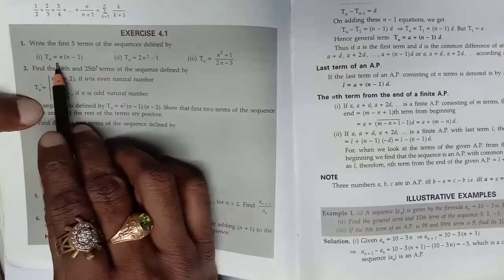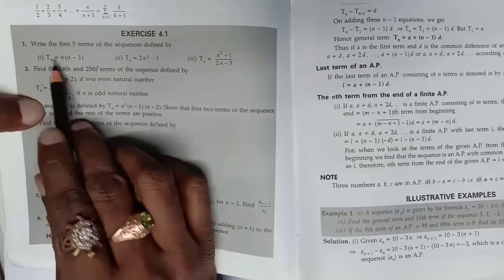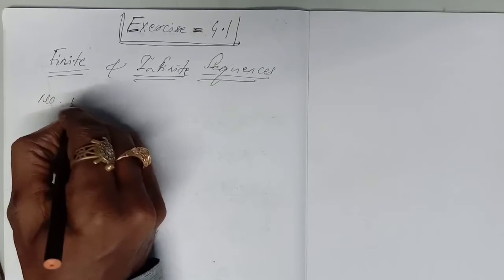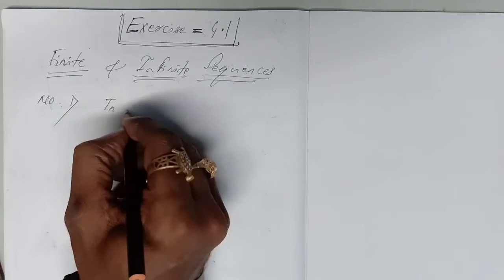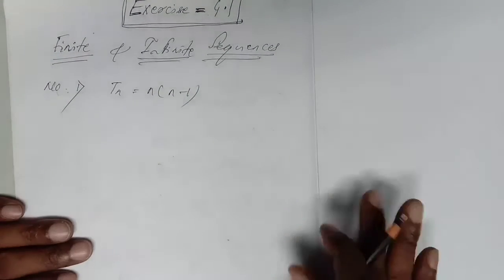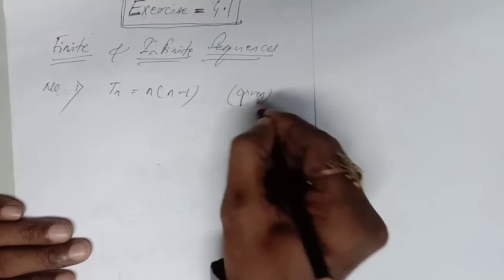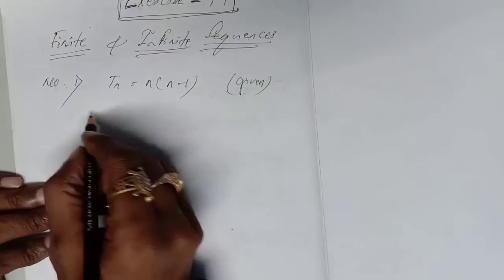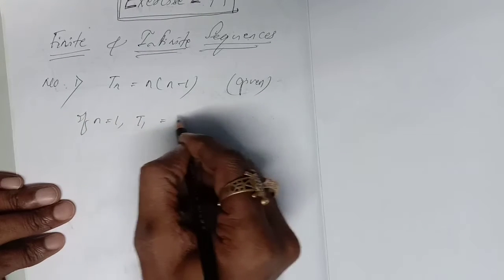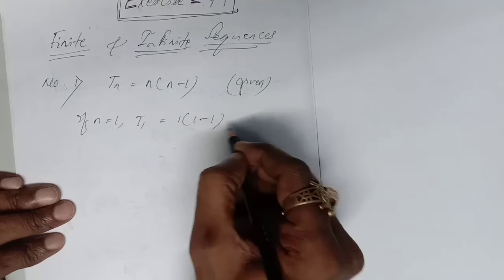Exercise 4.1, Number 1, first part. The nth term Tn is given as n(n−1). You have to find the first 5 terms. Putting n equal to 1, I will get the first term: 1 × (1−1) = 0.